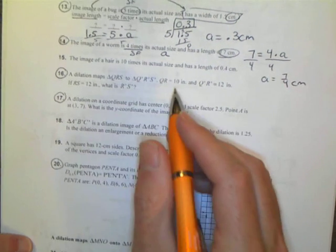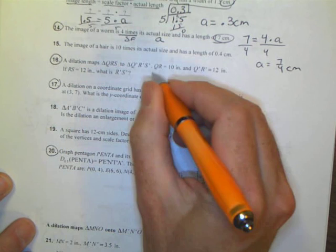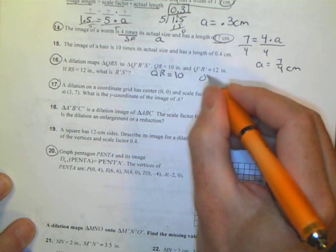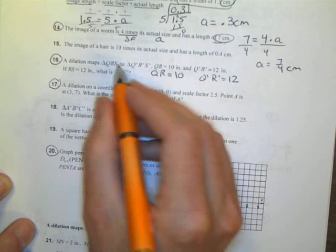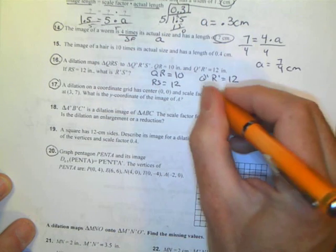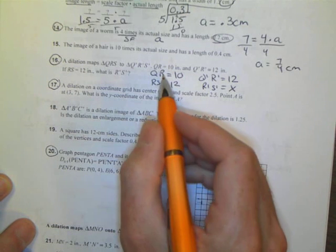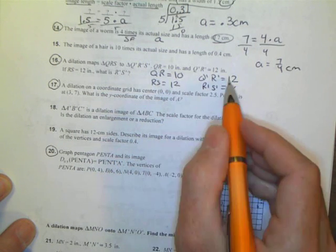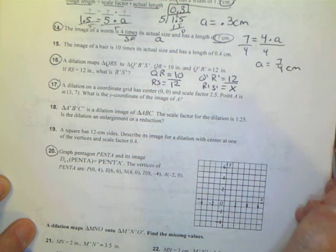Number 16. We have a dilation that maps triangle QRS to Q prime, R prime, S prime. It tells me QR equals 10, Q prime R prime equals 12, RS from the original triangle is 12, and R prime S prime equals X. If you look at what I have here, I have essentially a segment of a triangle, and then the dilation is the same segment. I can set this up as two ratios and make it a proportion.